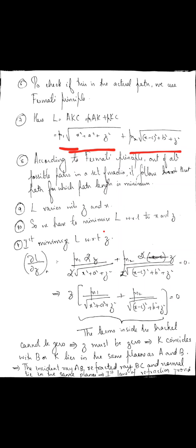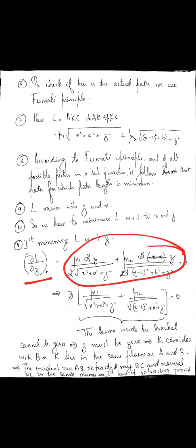Now we minimize L with respect to X and Z. First, I minimize L with respect to Z, just as I did for the laws of reflection. When I differentiate ∂L/∂Z, I get an equation where I can factor out Z with terms inside a bracket.